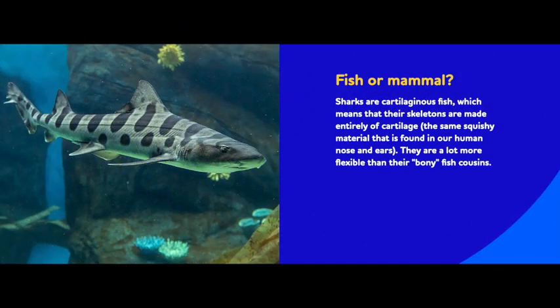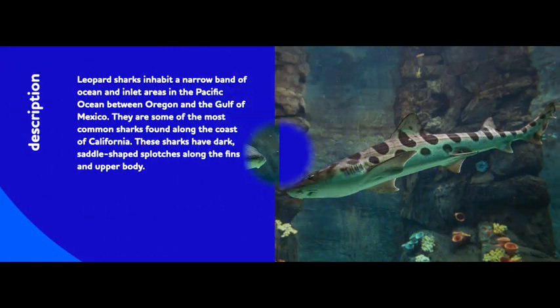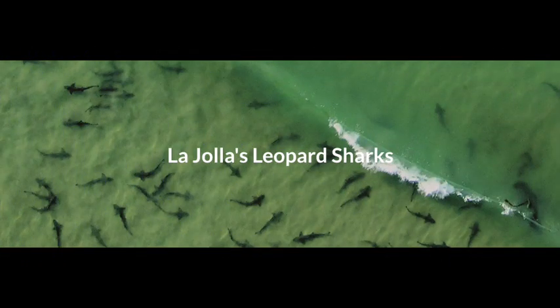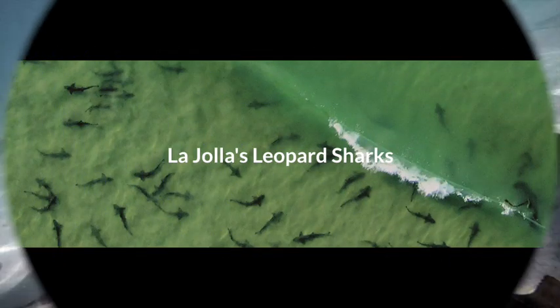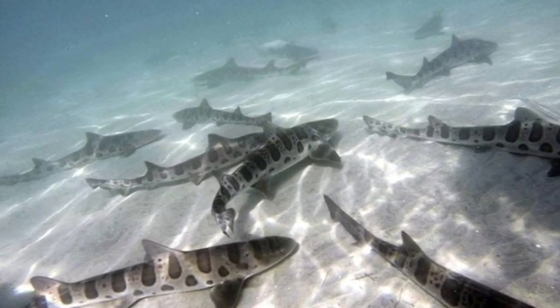Sharks are cartilaginous fish, which means that their skeletons are made entirely of cartilage, the same squishy material that is found in our human nose and ears. They are a lot more flexible than their bony fish cousins. Leopard sharks inhabit a narrow band of ocean and inlet areas in the Pacific Ocean between Oregon and the Gulf of Mexico. They are some of the most common sharks found along the coast of California. These sharks have dark saddle-shaped splotches along the fins and upper body. I have had the pleasure of swimming and snorkeling with leopard sharks in La Jolla and I've also seen them in Laguna Beach.